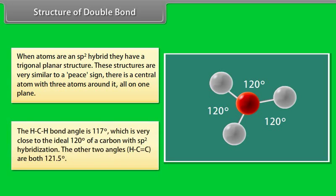Trigonal planar molecules have an ideal bond angle of 120 degrees on each side. The H-C-H bond angle is 117 degrees, which is very close to the ideal 120 degrees of carbon with sp2 hybridization. The other two angles, H-C-C, are both 121.5 degrees.